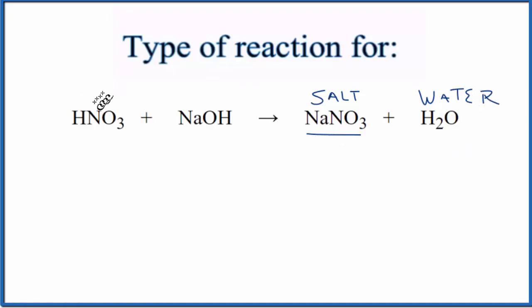On the reactant side we can see we have nitric acid. That's an acid and we can tell that's an acid. This H in front of it, that's usually a clue that we have an acid.